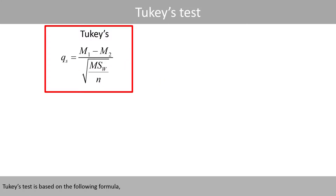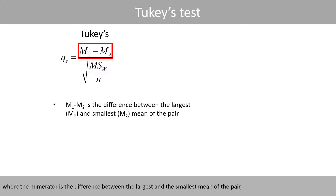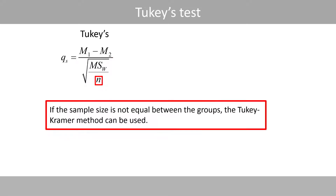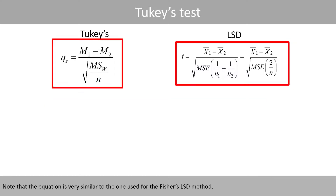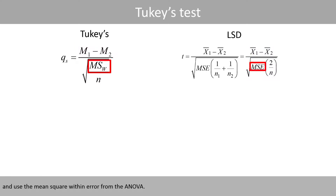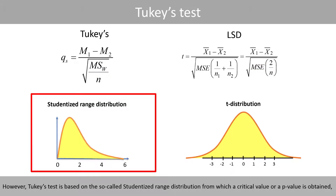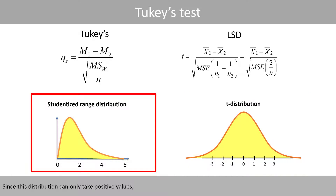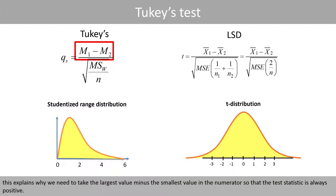Tukey's test is based on a formula where the numerator is the difference between the largest and the smallest mean of the pair, and the denominator is the square root of the MSE from ANOVA and the sample size of each group. If the sample size is not equal between the groups, the Tukey-Kramer method can be used. Note that the equation is very similar to the one used for Fischer's LSD method — both calculate the difference between the means and use the mean square within error from the ANOVA. However, Tukey's test is based on the studentized range distribution, whereas Fischer's LSD method uses a t-distribution. Since this distribution can only take positive values, we take the largest value minus the smallest value in the numerator so that the test statistic is always positive.